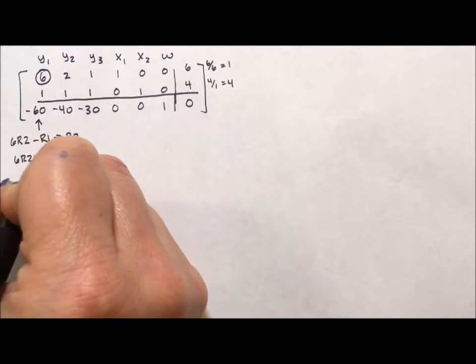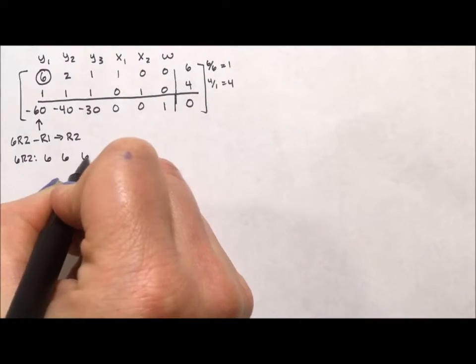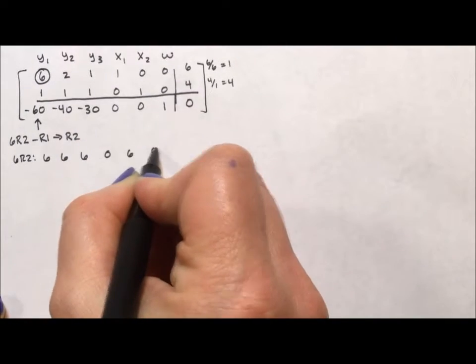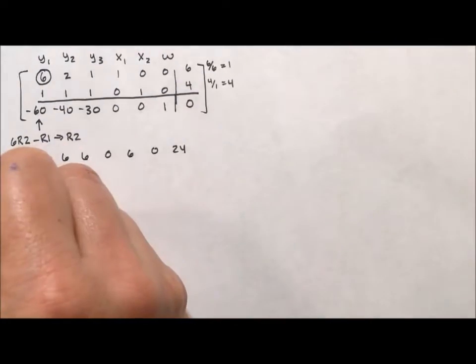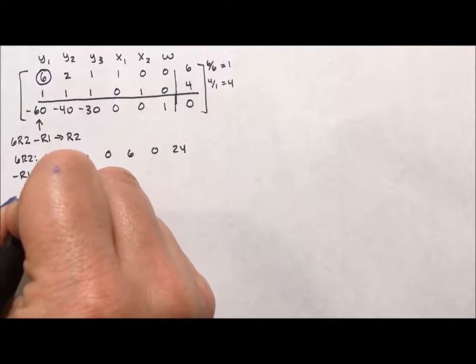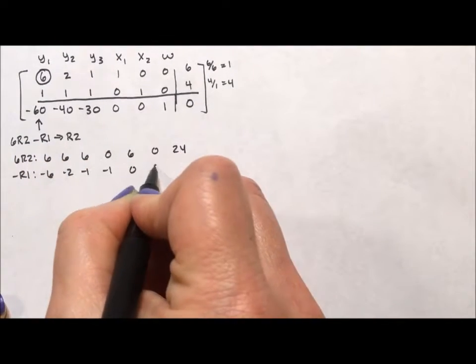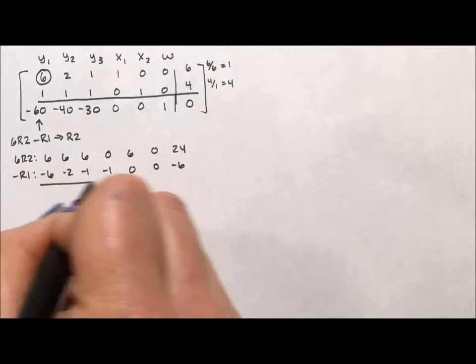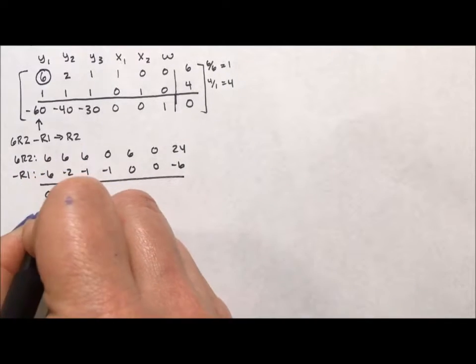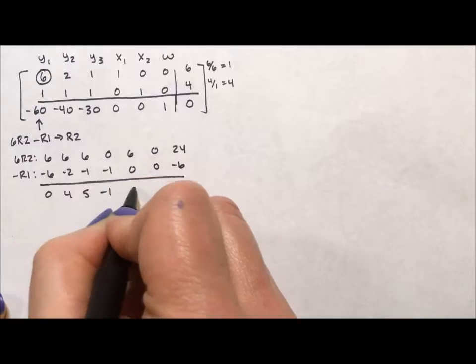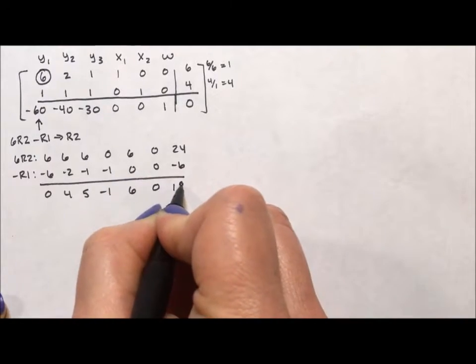So I'm going to take 6 times row 2 and subtract row 1 and put that into row 2. So 6 times row 2 is going to be 6, 6, 6, 0, 6, 0, 24. And minus row 1 is going to be negative 6, negative 2, negative 1, negative 1, 0, 0, negative 6. And when I add down, I'm going to get 0, 4, 5, negative 1, 6, 0, 18.